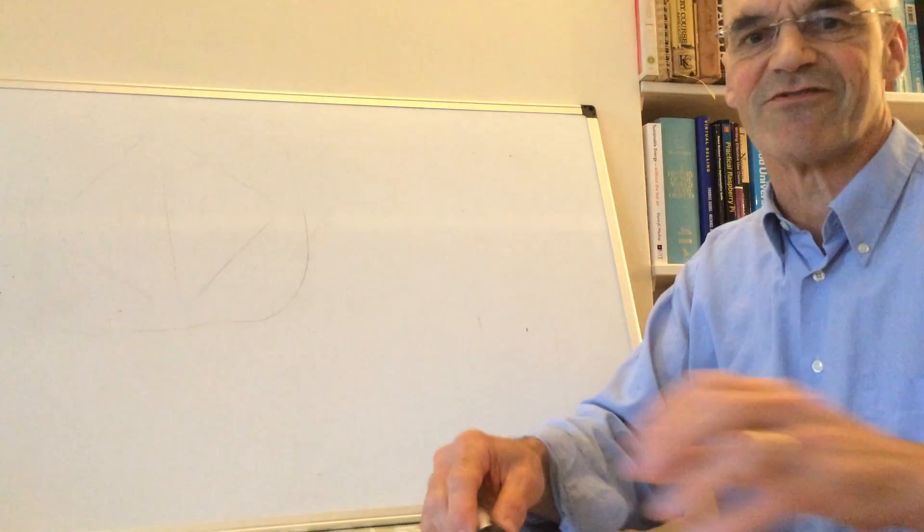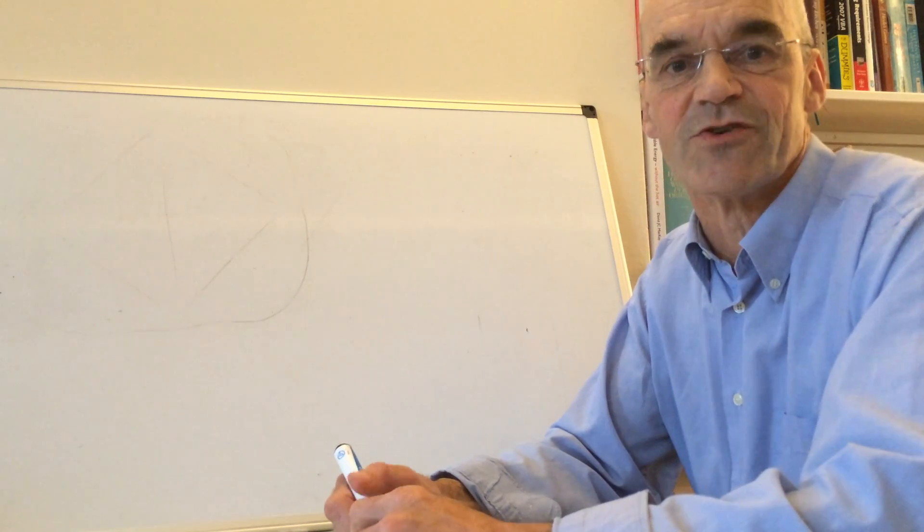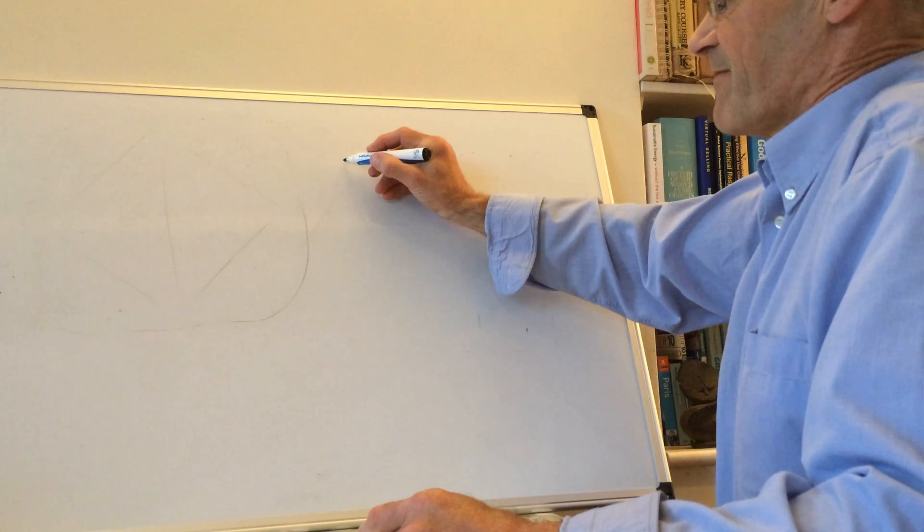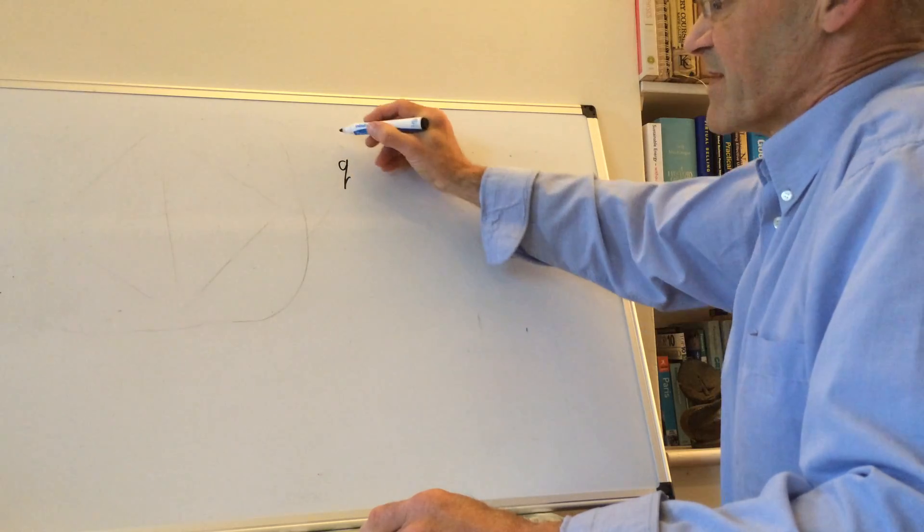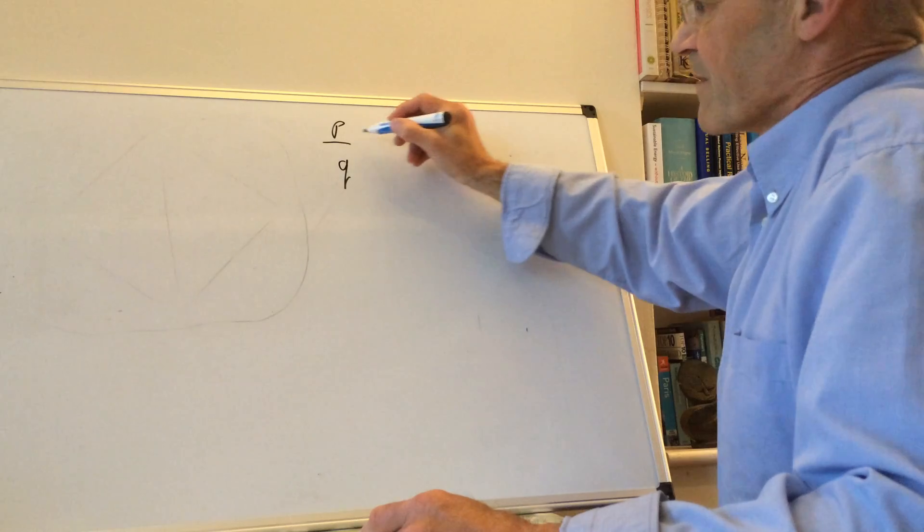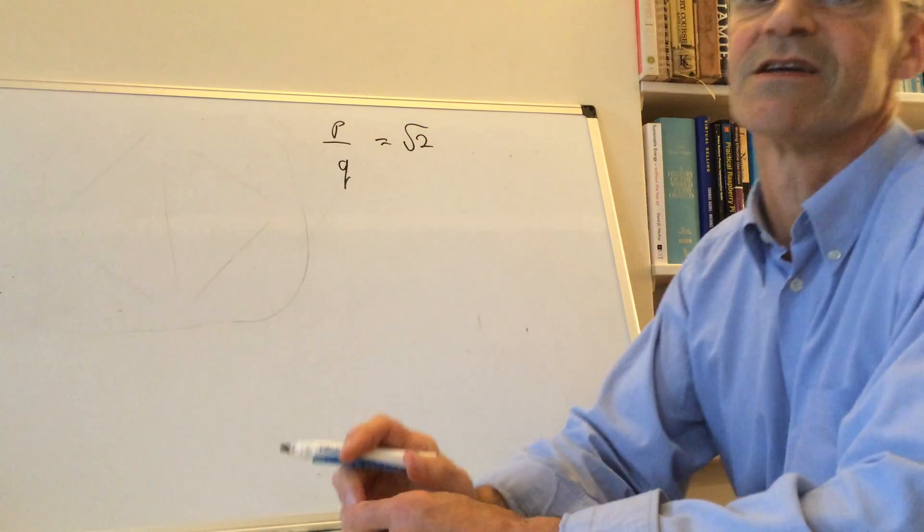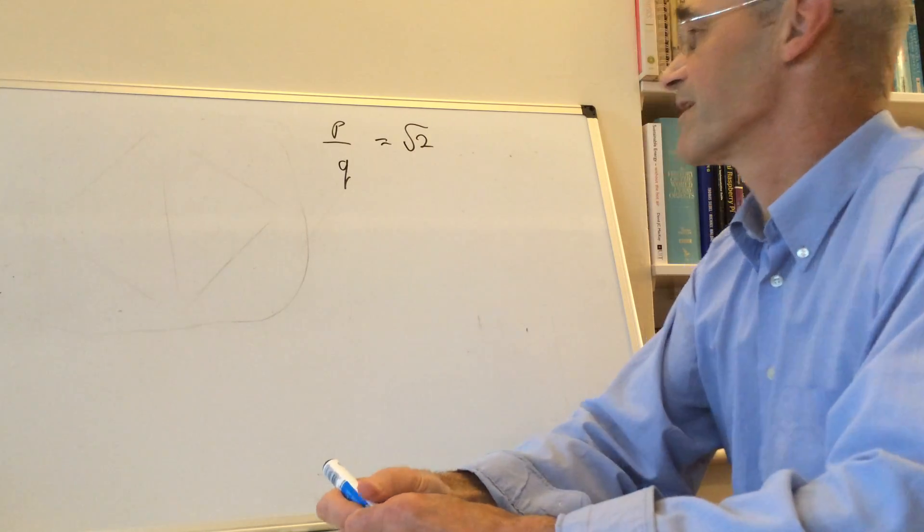So the next thing I want to show you about √2 is that √2 is irrational, so it can't be expressed as a fraction in whole numbers. So there are no two whole numbers that when you divide one by the other you get √2.